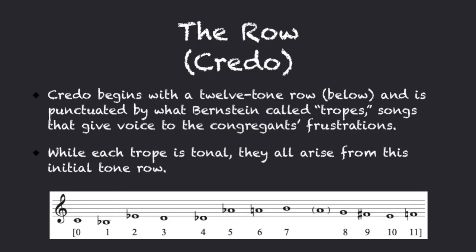Credo begins with a 12-tone row and is punctuated by what Bernstein called tropes — songs that give voice to the congregants' frustrations. While each trope is tonal, they all arise from this initial tone row.